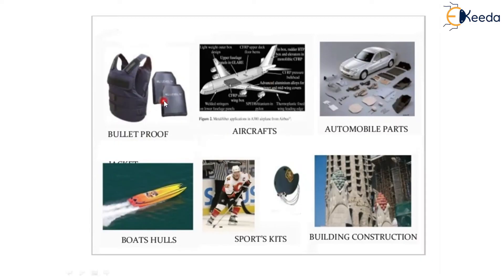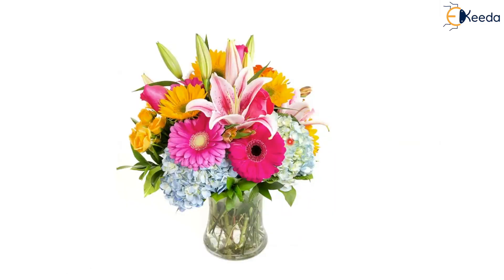Applications of composite materials include bulletproof vests, aircraft parts, automobile parts, sports kits, boards, and building construction. The Boeing airplane is made with 80 percent composite material, and automobile parts are increasingly constructed with composite materials. This represents a significant technological advance compared to other available materials. This concludes the basics of composite material; more points will be discussed in the next session.